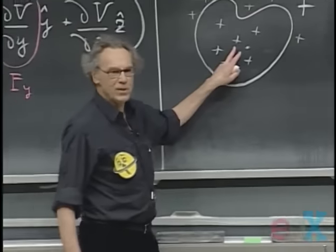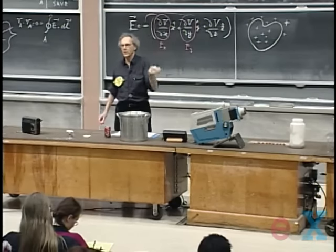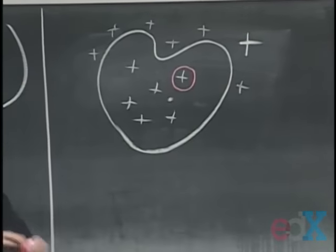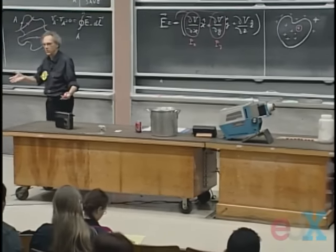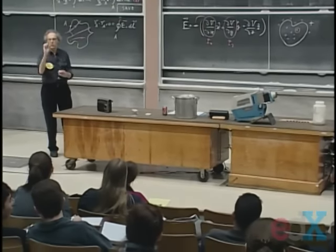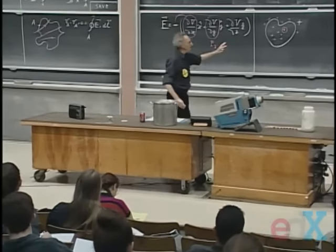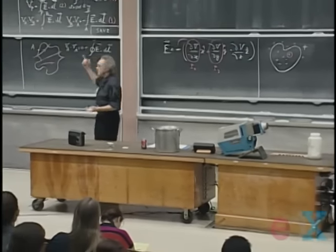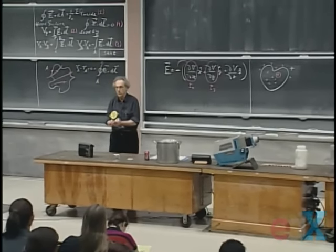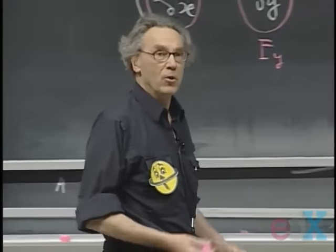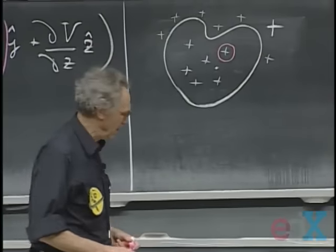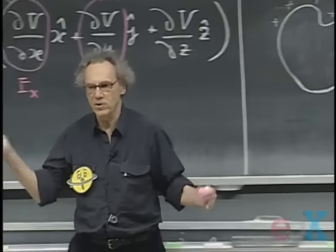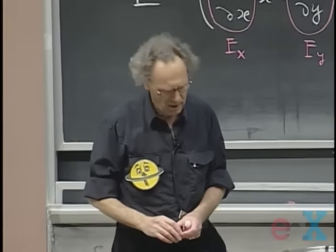Let's look at the possibility that charge would end up in the conductor itself. I take a Gaussian surface — a closed surface — inside the conductor. I know the E field everywhere in a static field must be zero on this surface. So the integral of E dot dA equals zero. That means the charge inside my Gaussian surface is zero, so there cannot be any charge there. Gauss's law immediately kills the possibility of any charge inside the conductor. So the charge must be at the surface.